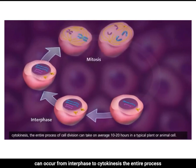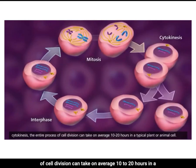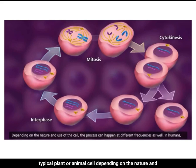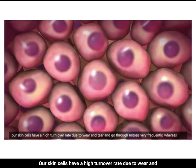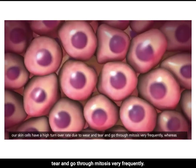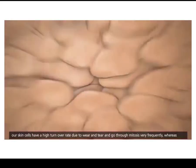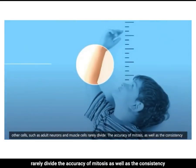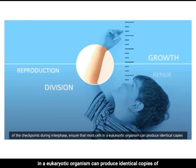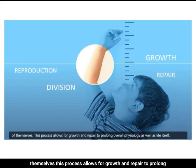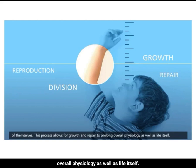Growth factors, cell size, and nutritional state are all contributing factors in cell cycle regulation, ensuring only certain cells divide at appropriate times. From interphase to cytokinesis, the entire process can take on average 10 to 20 hours in a typical plant or animal cell. Depending on the nature and use of the cell, this can happen at different frequencies — human skin cells have a high turnover rate and go through mitosis very frequently, whereas adult neurons and muscle cells rarely divide. The accuracy of mitosis and consistency of checkpoints ensure most eukaryotic cells can produce identical copies, allowing for growth, repair, and life itself.